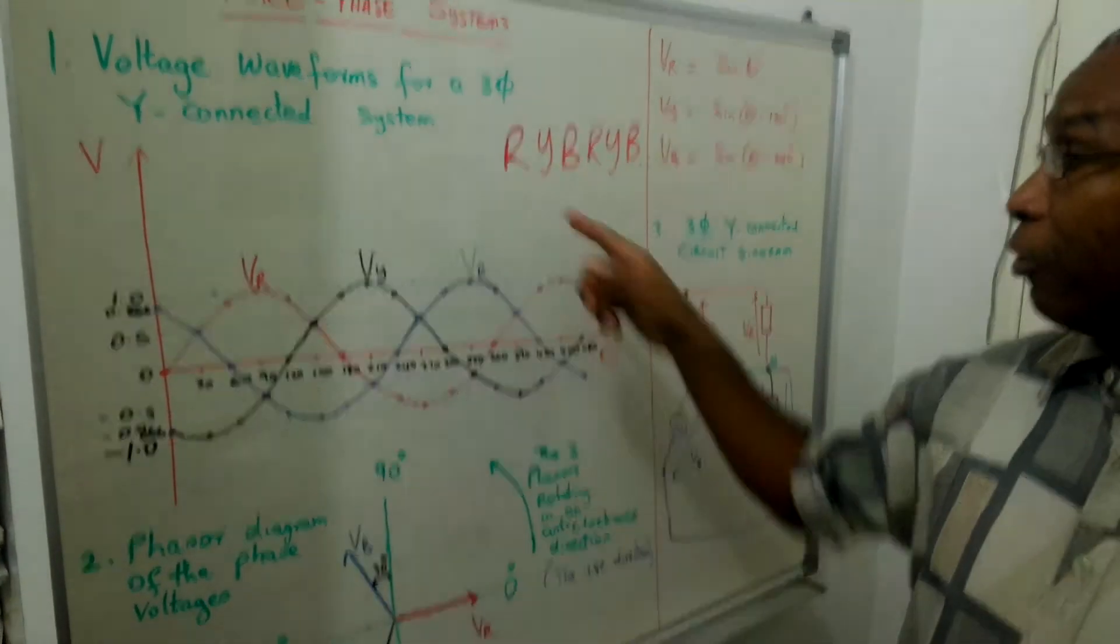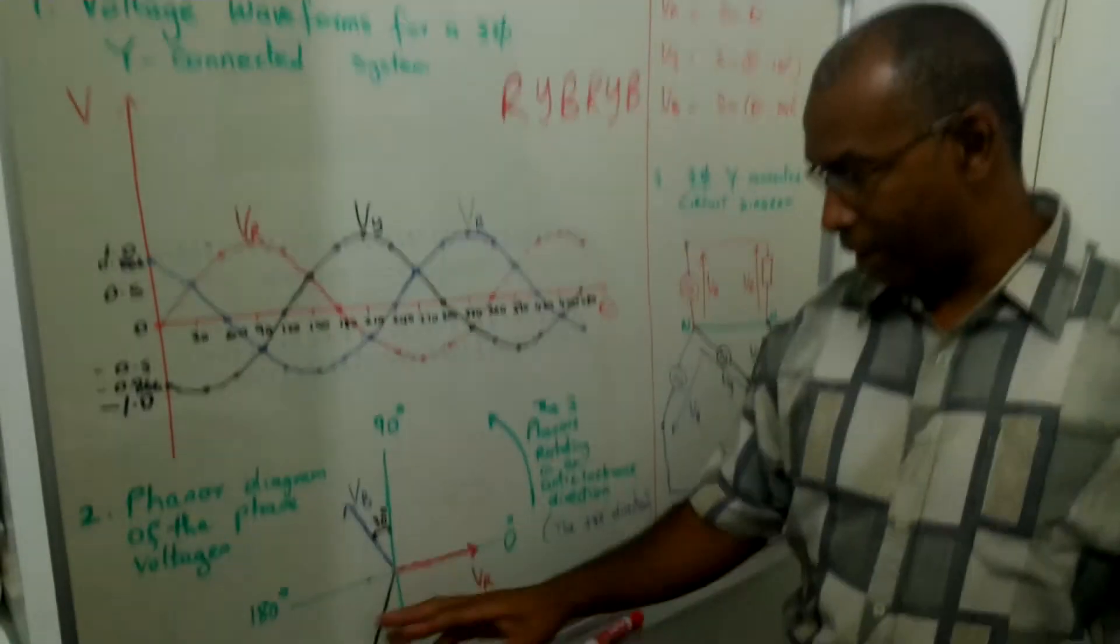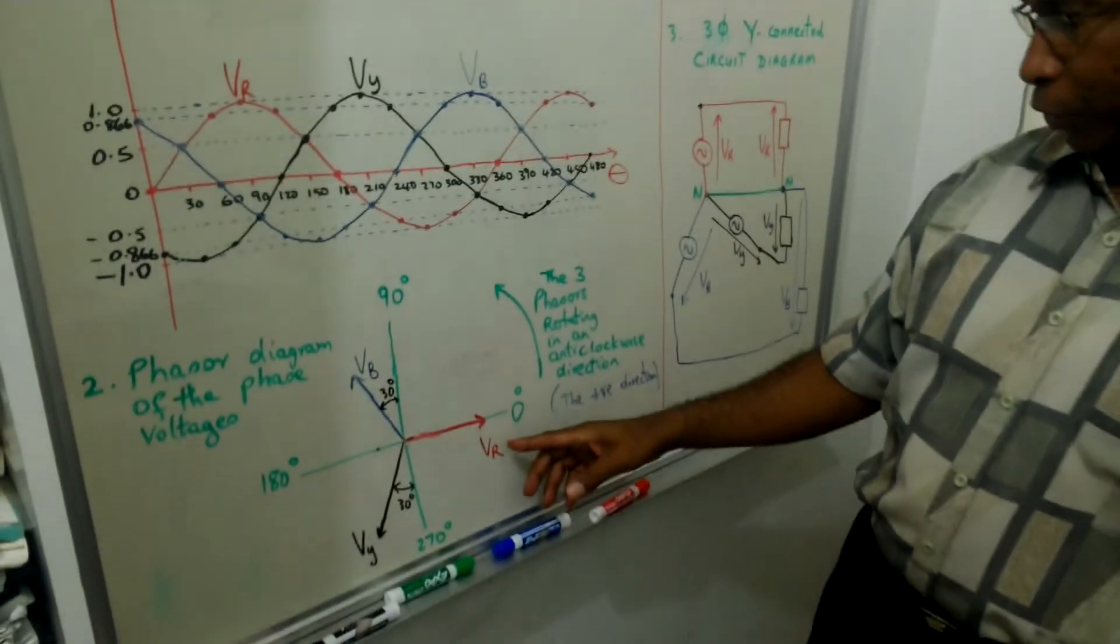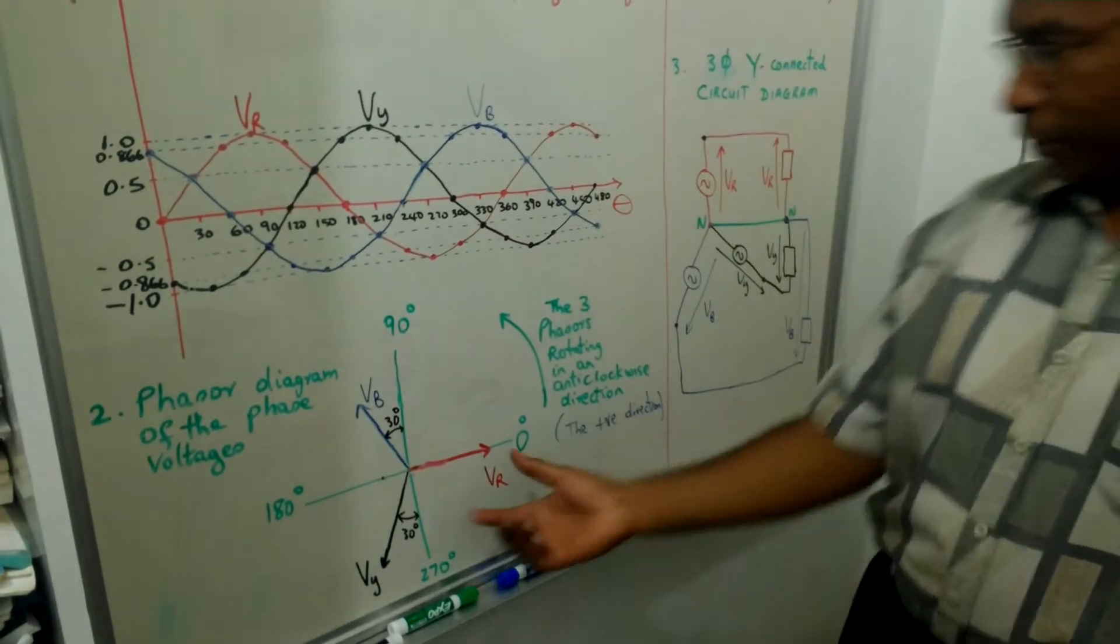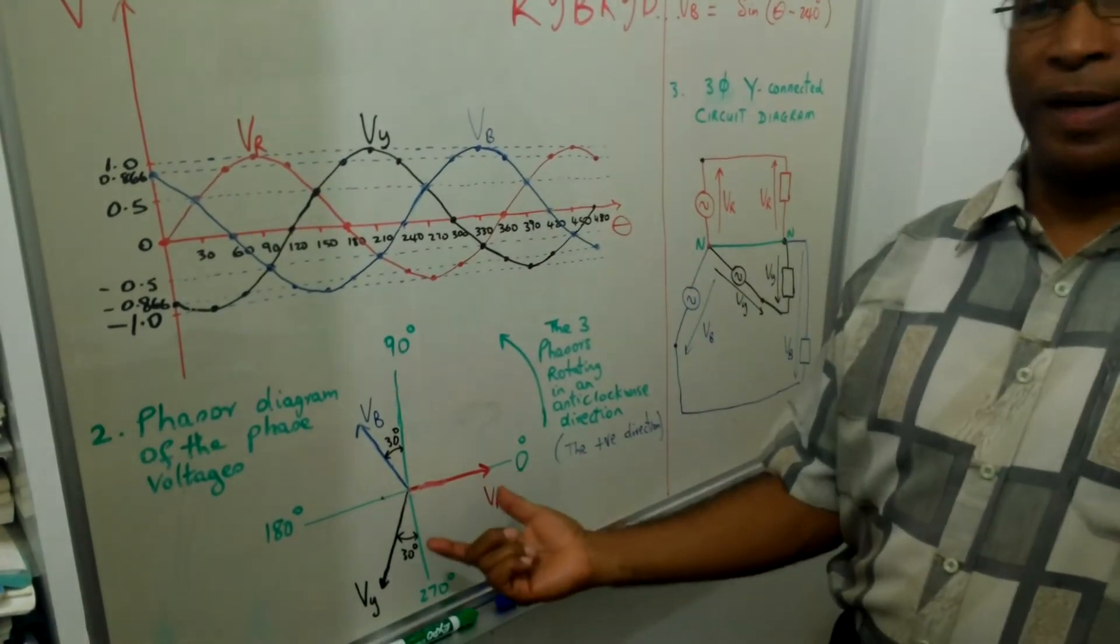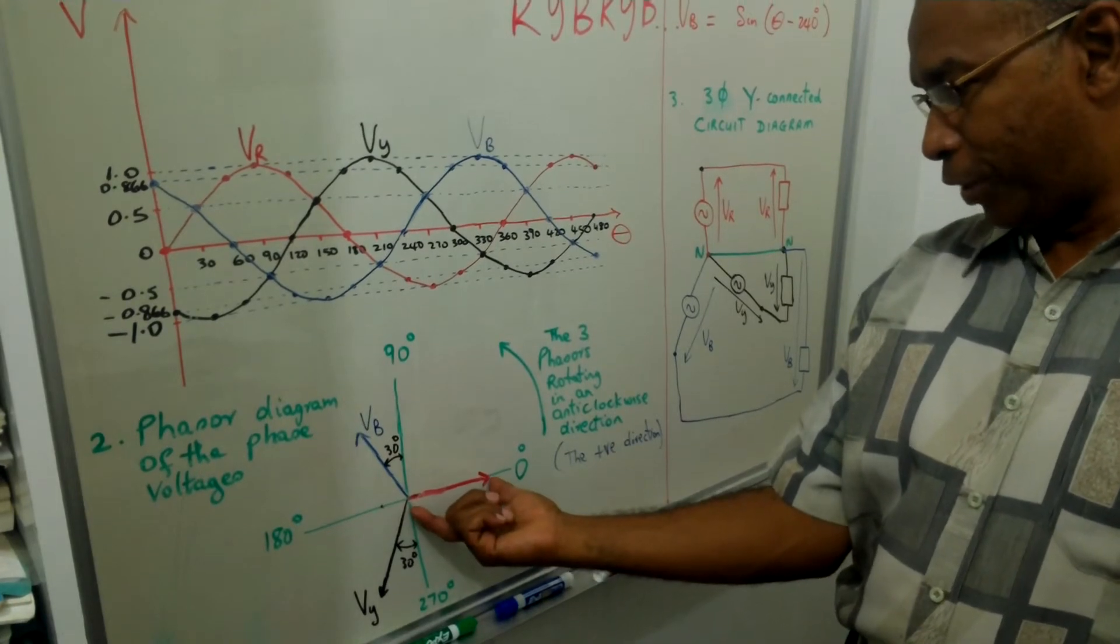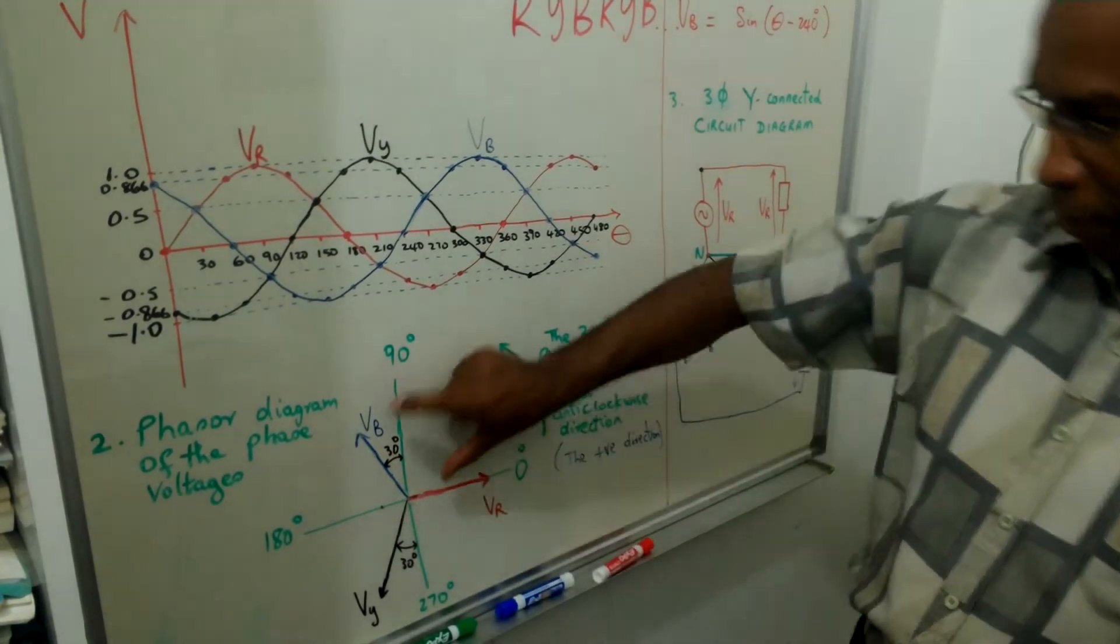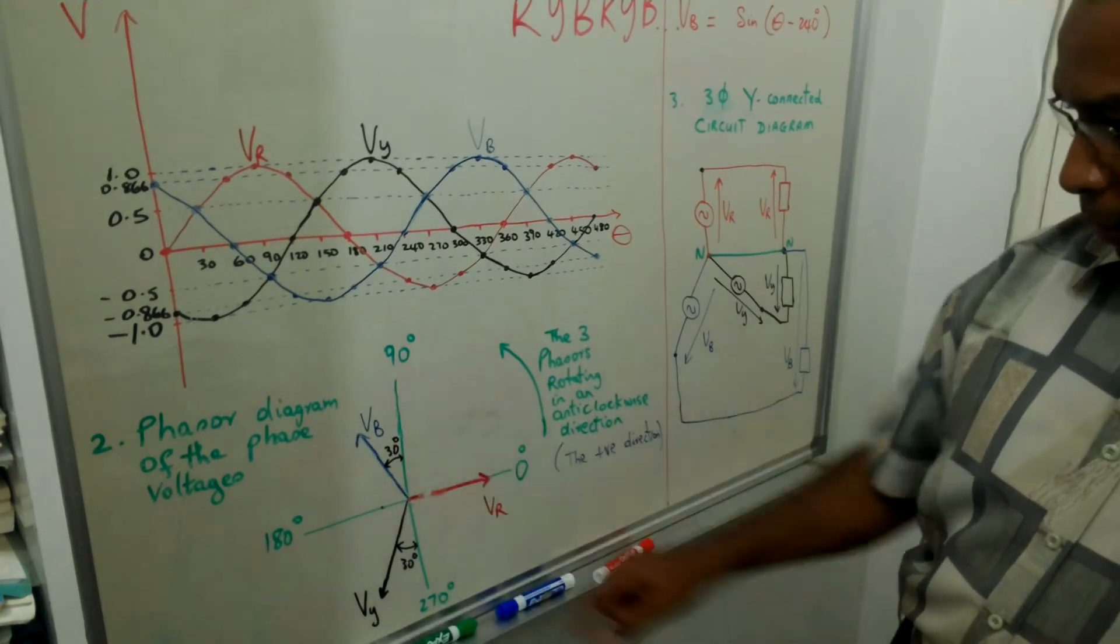Now we can also represent the voltage waveform by phasors. And the phasor diagram here will show you the orientation of these waveforms. So the voltage waveform has a constant magnitude. And if you check the magnitude is the same for each of them. And they are all 120 degrees apart from each other.